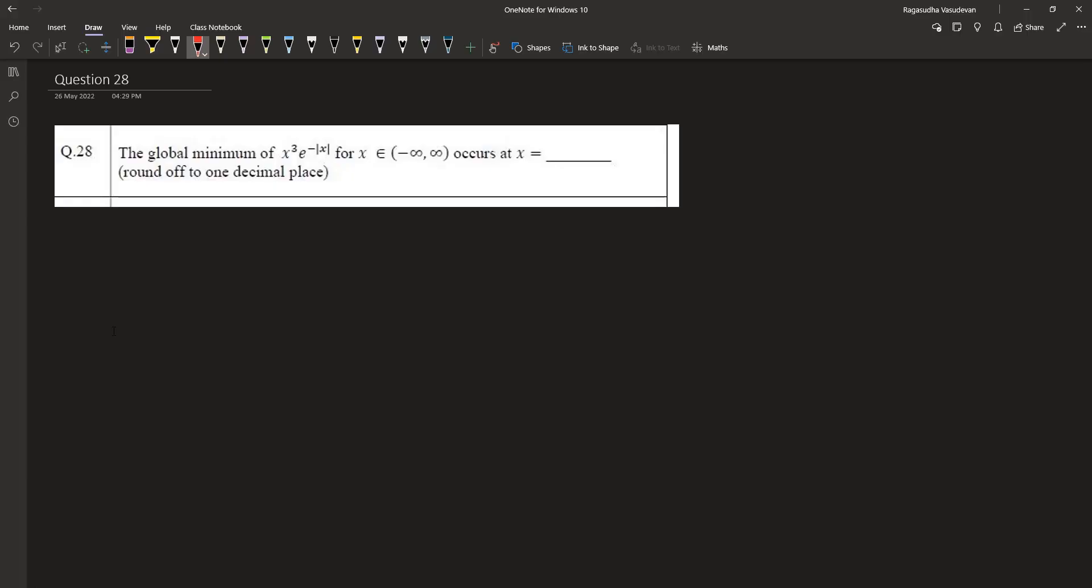The global minimum of this function is asked, which means throughout the range of this function, which is from minus infinity to infinity, what is the most minimum point? That is what is asked. Let us call this function as f of x. f of x is equal to x cube e to the power minus mod x. Let us find the points where the slope is 0.